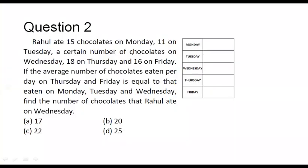In this question, it is given that Rahul ate 15 chocolates on Monday, 11 chocolates on Tuesday, and a certain number of chocolates on Wednesday — the number we don't know. Let us assume it to be equal to X. He ate 18 chocolates on Thursday and 16 on Friday.